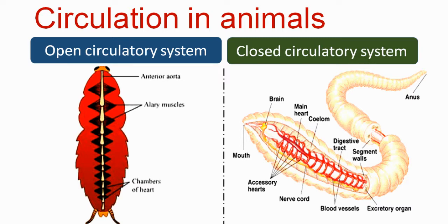In the closed circulatory system, organs are not in direct contact with blood — they are in indirect contact. Nutrients are supplied through the capillary wall. In the open circulatory system, organs and tissues are in direct contact with blood.